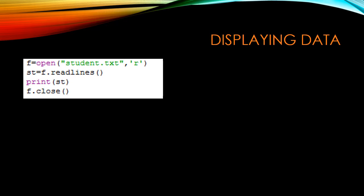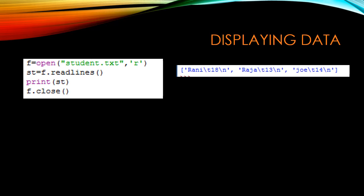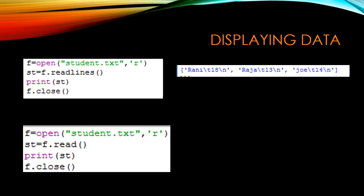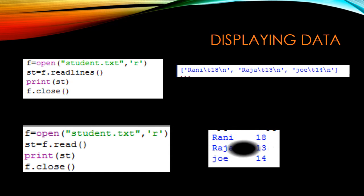Next, for displaying data, using readlines we can read line by line and print the data from student.txt file. Using the read method also we can display data from a file. The difference between these two: readlines will show the delimiter '\n', but the read function won't show that.